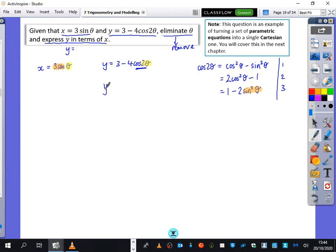So I'm going to just substitute. In place of cos 2 theta, I'm going to substitute in number 3. And I'm going to expand the brackets carefully. So that's 3 minus 4 plus 8 sine squared theta. So that's 8 sine squared theta minus 1.